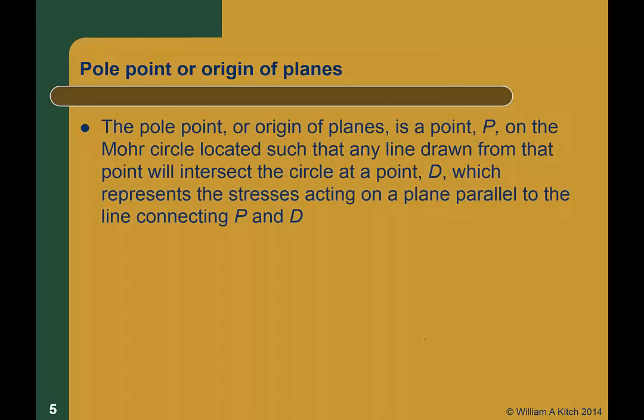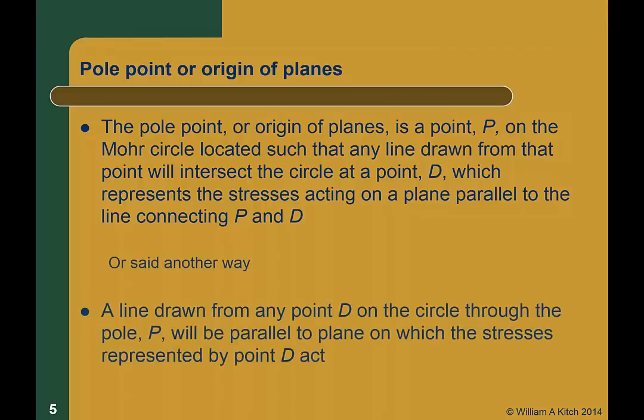In its formal definition, the pole point or origin of planes is a point P on the Mohr's circle located such that any line drawn from that point will intersect the circle at a point D, which represents the stresses acting on a plane parallel to the line connecting P and D. Or said another way, a line drawn from any point D on the circle through the pole P will be parallel to the plane on which the stresses represented by that point D act. These definitions, while completely accurate, are hard to visualize and the concept is best illustrated by an example.